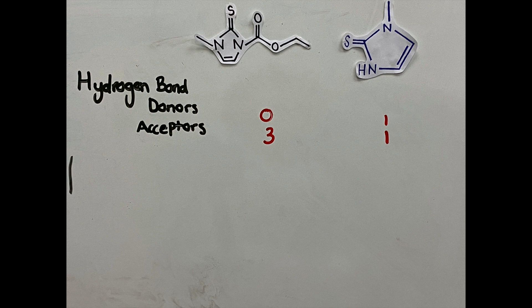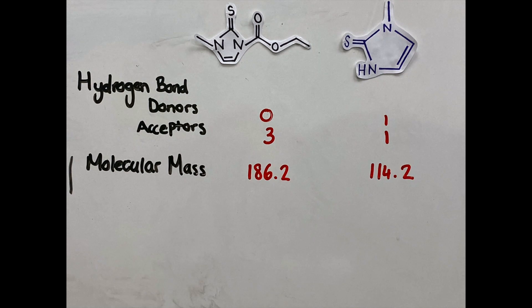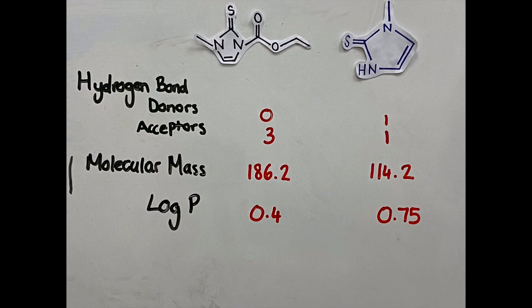Carbamazole has three hydrogen bond acceptors, zero hydrogen bond donors, a molecular mass of 186.2 Daltons, and a log P of 0.4.